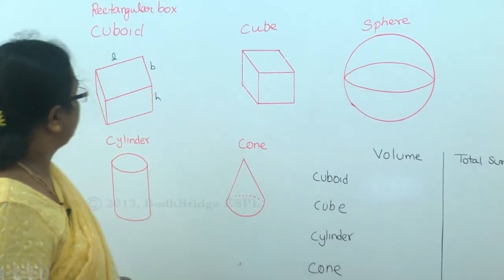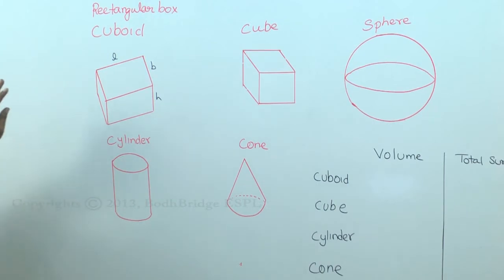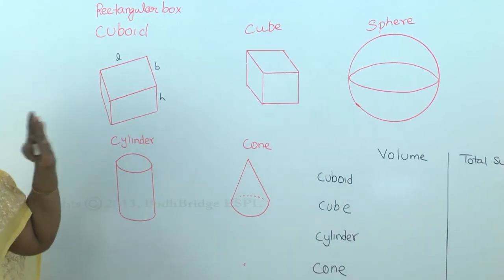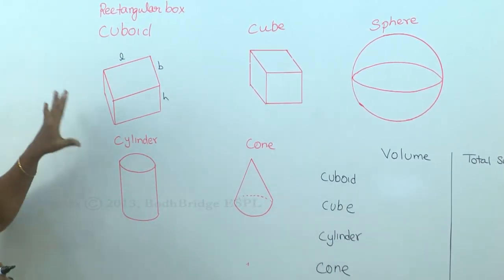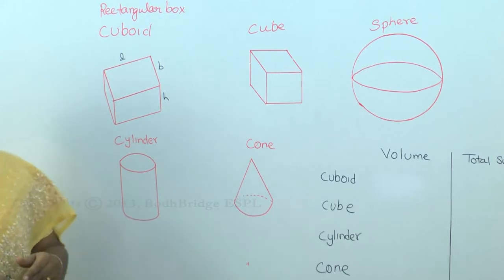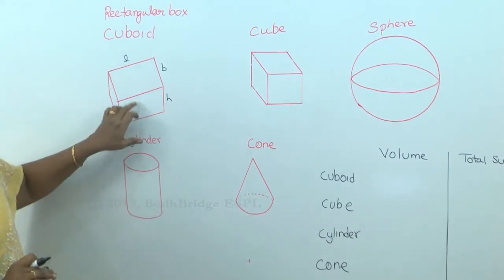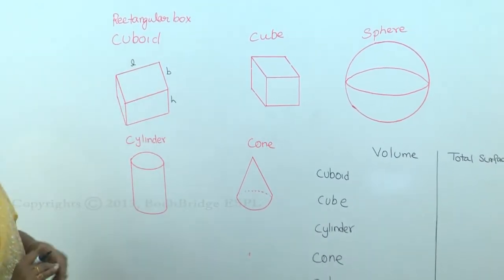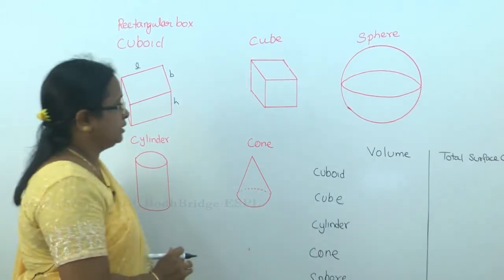The basic thing to note here is that solid geometry is not like other geometry where a lot of twisted questions will be given. Most of the questions in solid geometry are straightforward — for the cuboid, you have to know the volume and the total surface area.